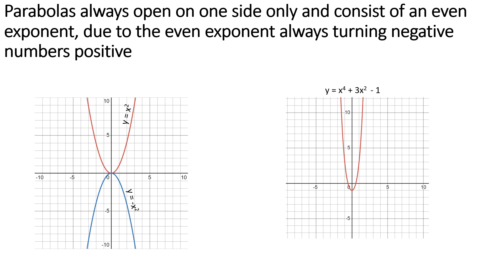Quick review here, because we're not studying so much the equation component but rather trying to identify the focus and the directrix in a parabola. A parabola always opens from one side to the other. Y equals x squared opens upward, y equals negative x squared opens downward. An equation like x to the fourth plus 3x squared minus 1 — any even exponent as the highest component will always give you some sort of parabola.